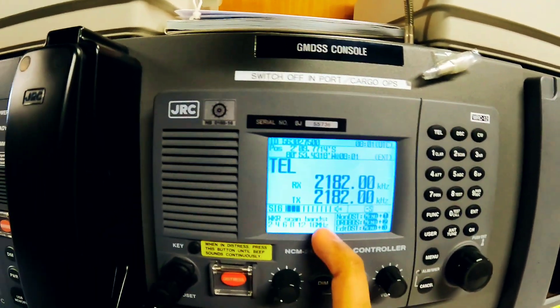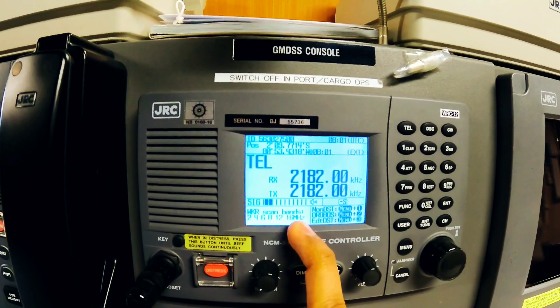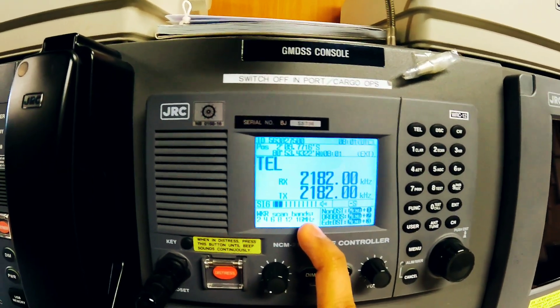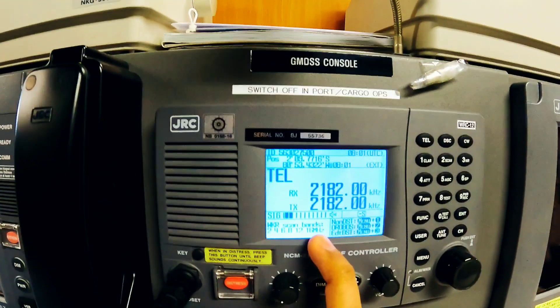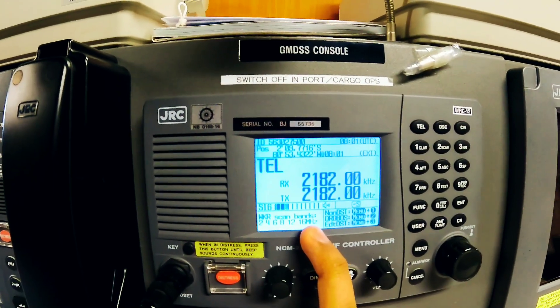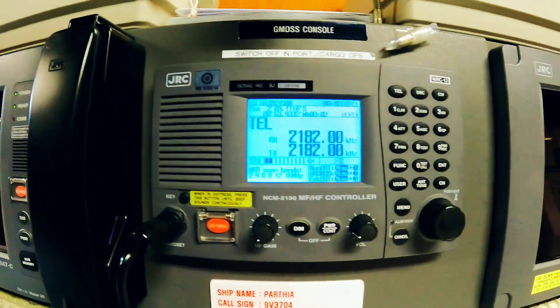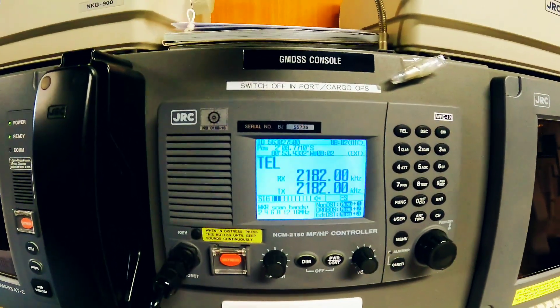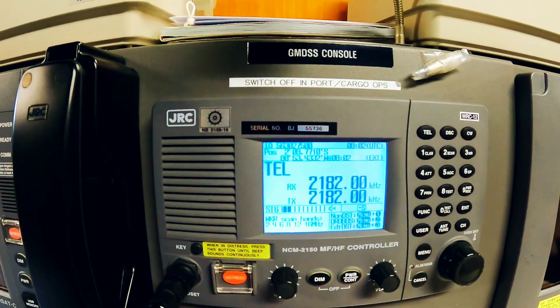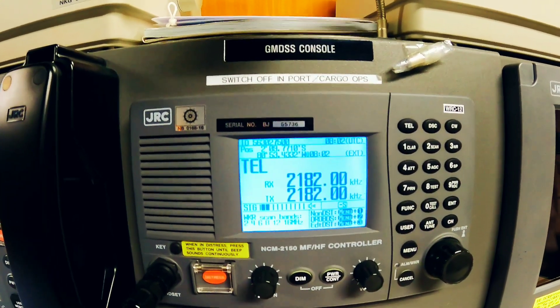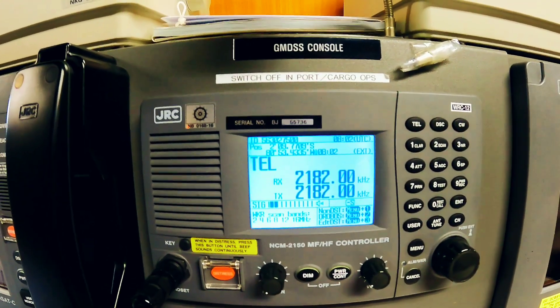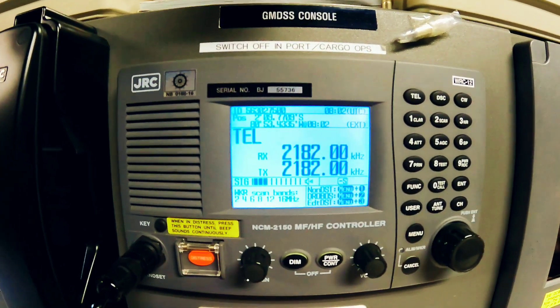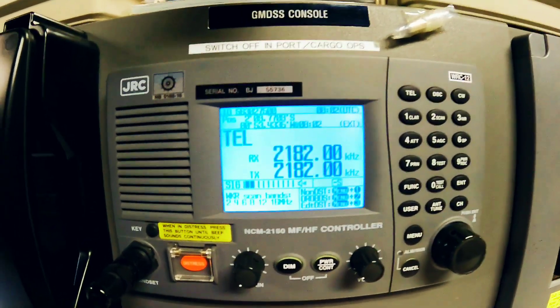This was about cancellation of MFHF DSC distress alert. The thing what you have to speak while canceling is like: all stations, all stations, all stations, this is ship's name and then call sign, and then cancel my distress alert of so and so time in UTC. That was about cancellation of DSC distress.